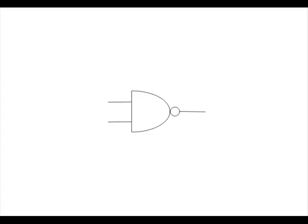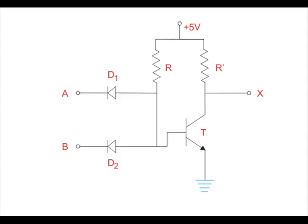Now we will try to realize a NAND gate using diodes and transistors. For simplicity, we will show here only a two-input NAND gate circuit using diodes and transistors. This NAND gate is called a DTL NAND gate, or Diode Transistor Logic NAND gate.